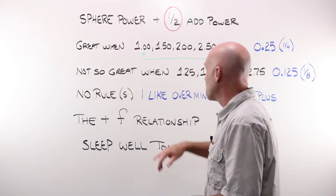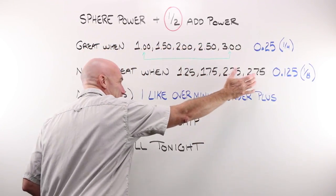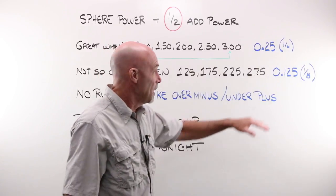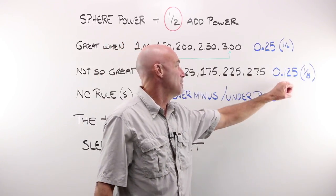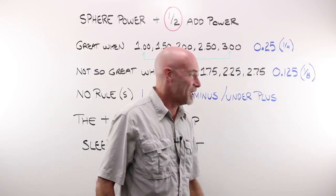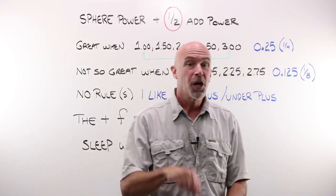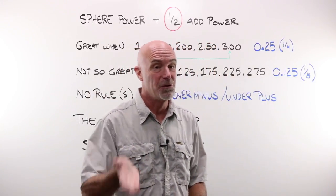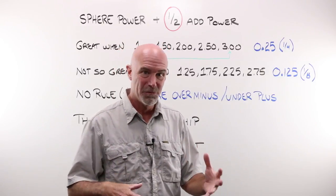It's not so great when you take 1.25, 1.75, 2.25, or 2.75 because then when you divide it by two you end up at an eighth diopter step or kind of stuck in no man's land. You're going to have to make the decision whether you go up or down, more plus or more minus.